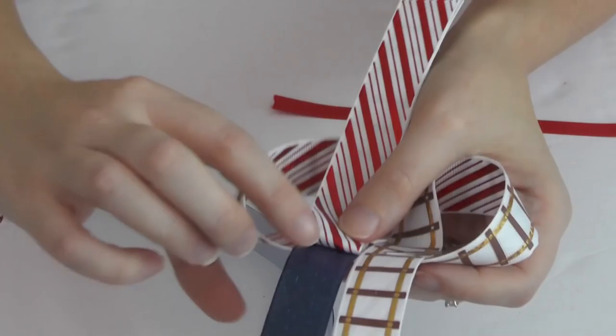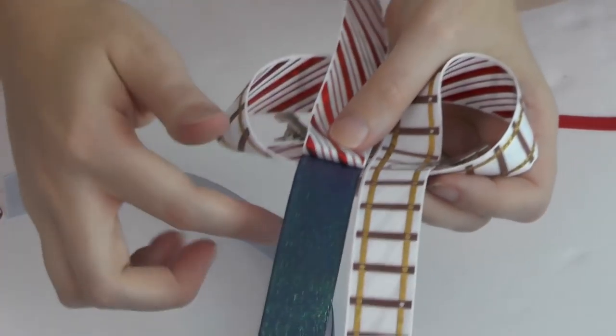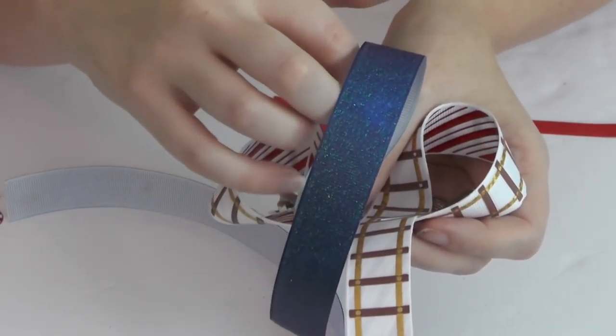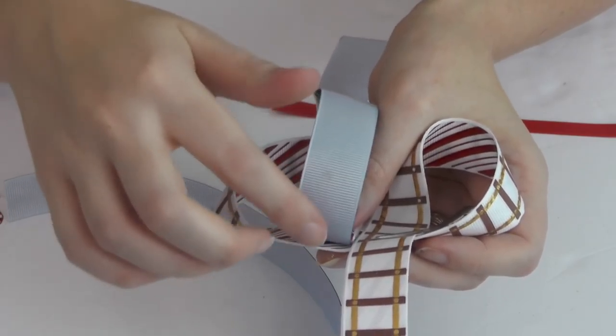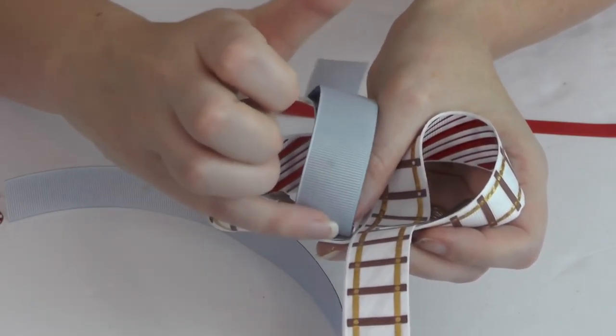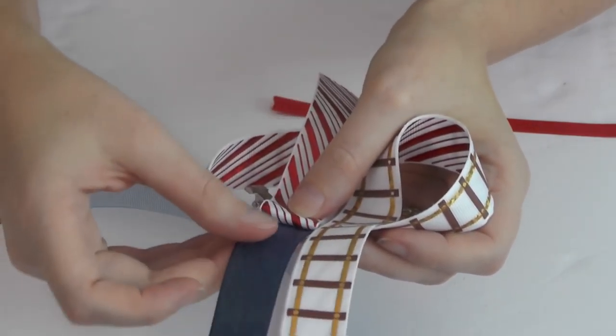Just like that, and you're just going to add some fabric fusion or your E6000 or whatever glue you're working with, and that's how we're going to attach these tails.